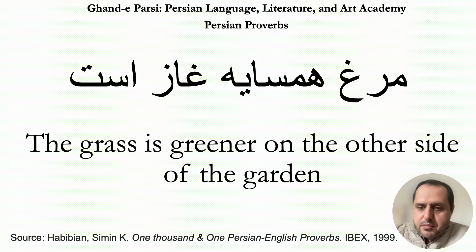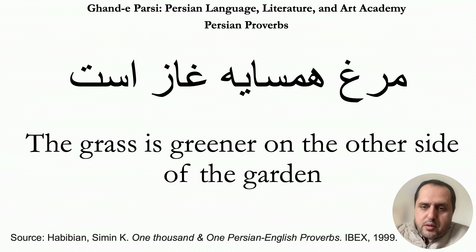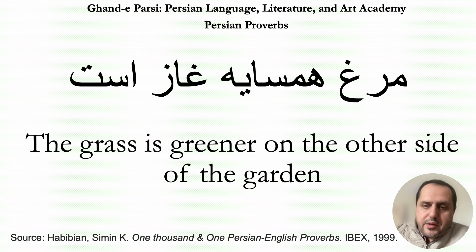The proverb in Persian is مرغ همسایه قاز است. It is generally considered as an equivalent to the English proverb that reads 'The grass is greener on the other side of the garden.' The Persian is مرغ همسایه قاز است. What does it mean literally?